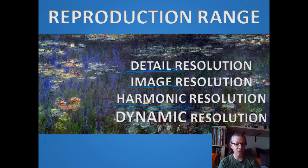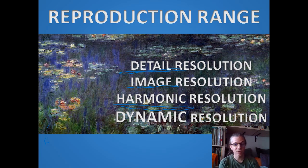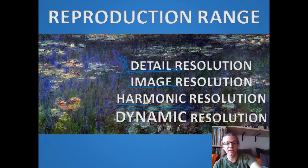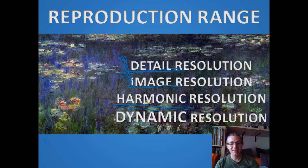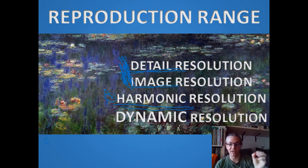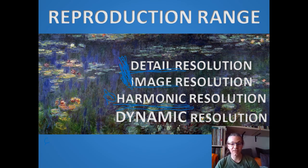There's also talk about harmonic resolution — can that equipment reproduce the harmonic content of a violin, or even more difficult instruments like a sitar or harpsichord? Those are super hard to reproduce. You can take a system that aces detail resolution and image resolution, such as a Chronosonic and D'Agostino combo, and for harmonic resolution it will get a failing grade, while getting A++ for image resolution and A+++ for detail resolution.